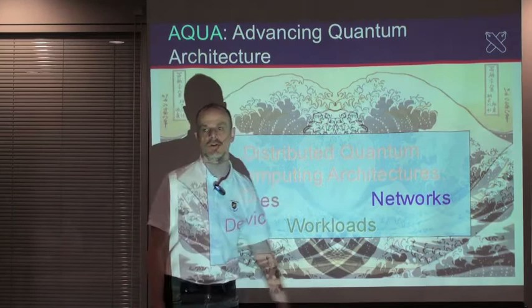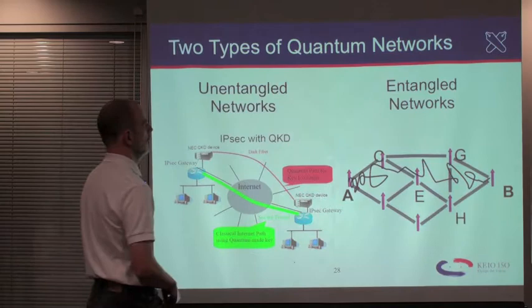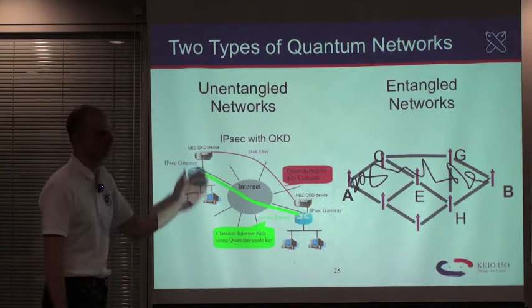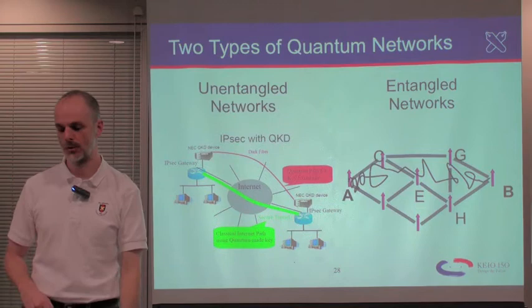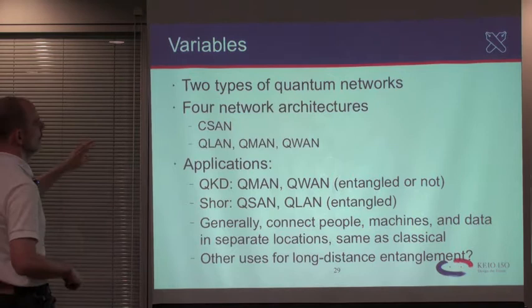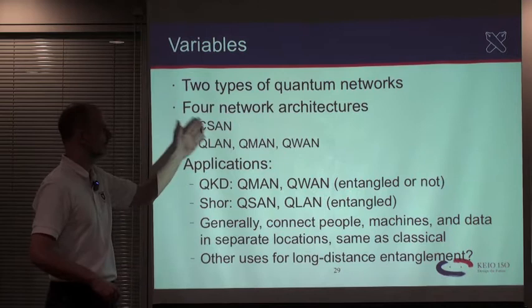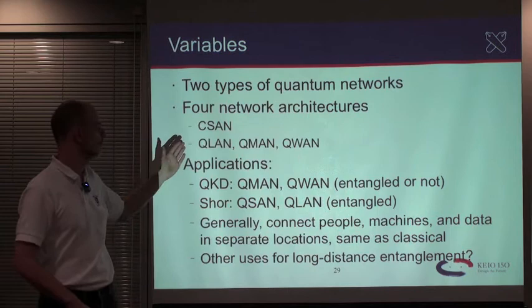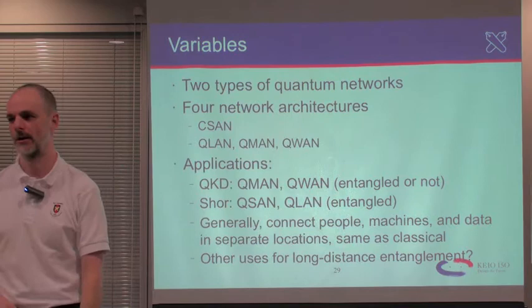We're going to build a laboratory-sized quantum multi-computer, or potentially one that connects devices in a city-sized area or across continents. Whether it's inside a room or across continents, we're talking about networks. In quantum systems there are two types of networks: entangled networks and unentangled networks. The primary use of unentangled networks that use quantum effects is quantum key distribution. If you want to run something like Shor's algorithm, you need entangled networks. Four possible network architectures: a quantum SAN (system area network), a quantum LAN, a quantum MAN, or a quantum WAN — QSAN, QLAN, QMAN, or QWAN.